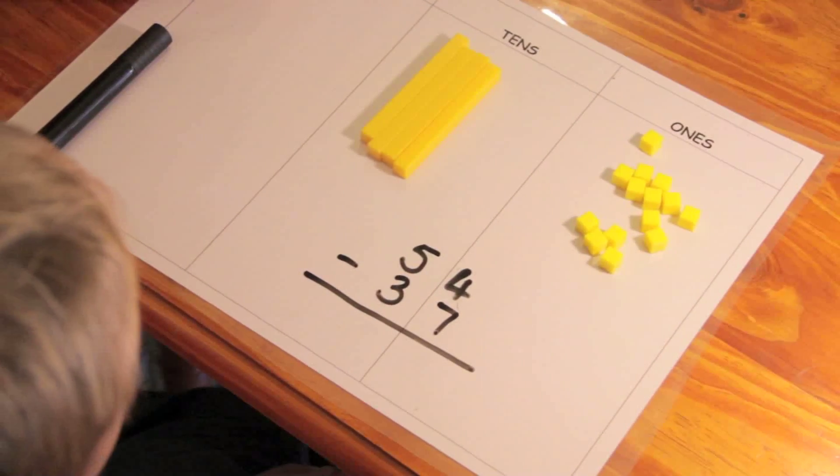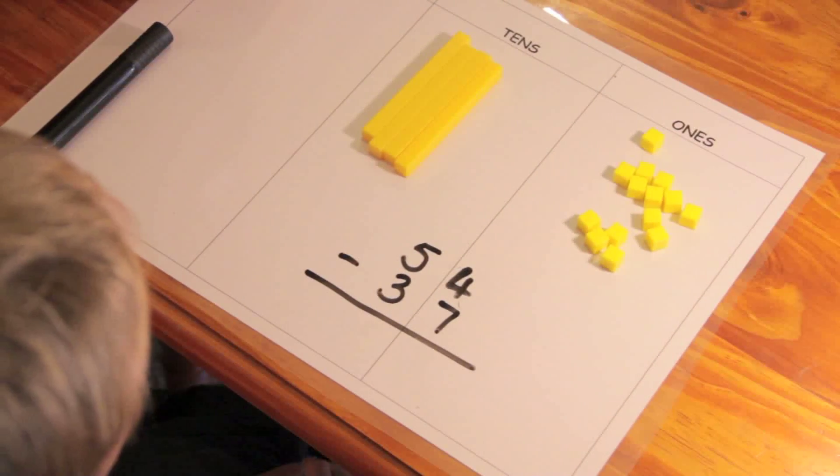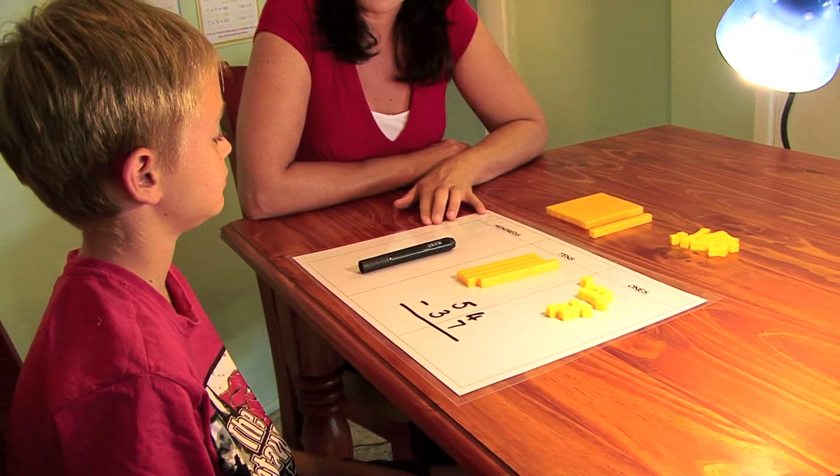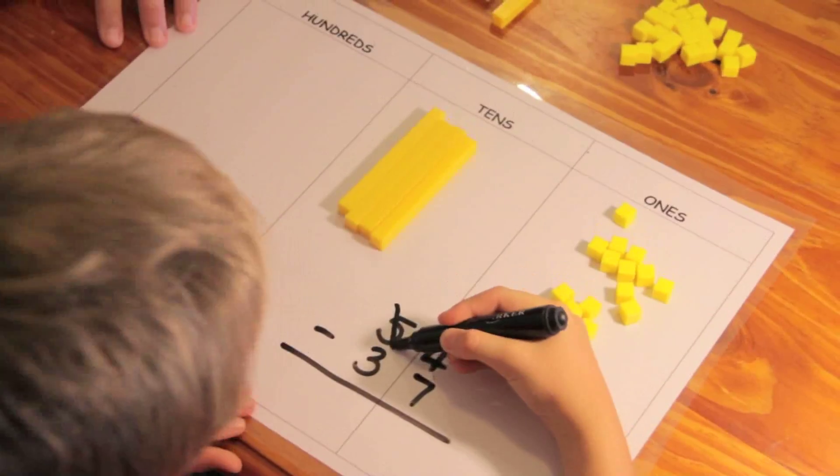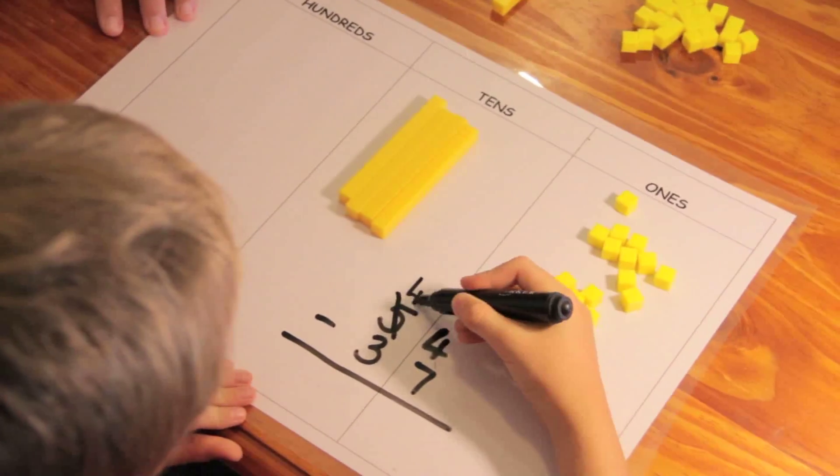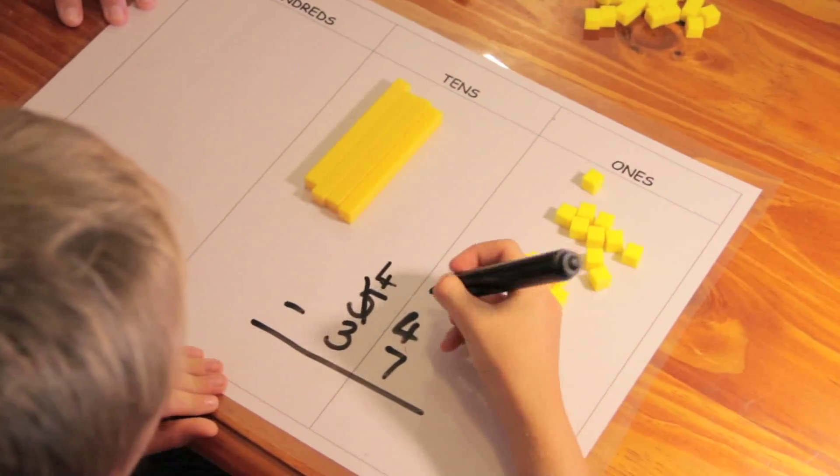And how many ones do we have now? Fourteen. Fourteen ones. How do we show that on our sum there? We took one of our tens and we traded it for ten ones.